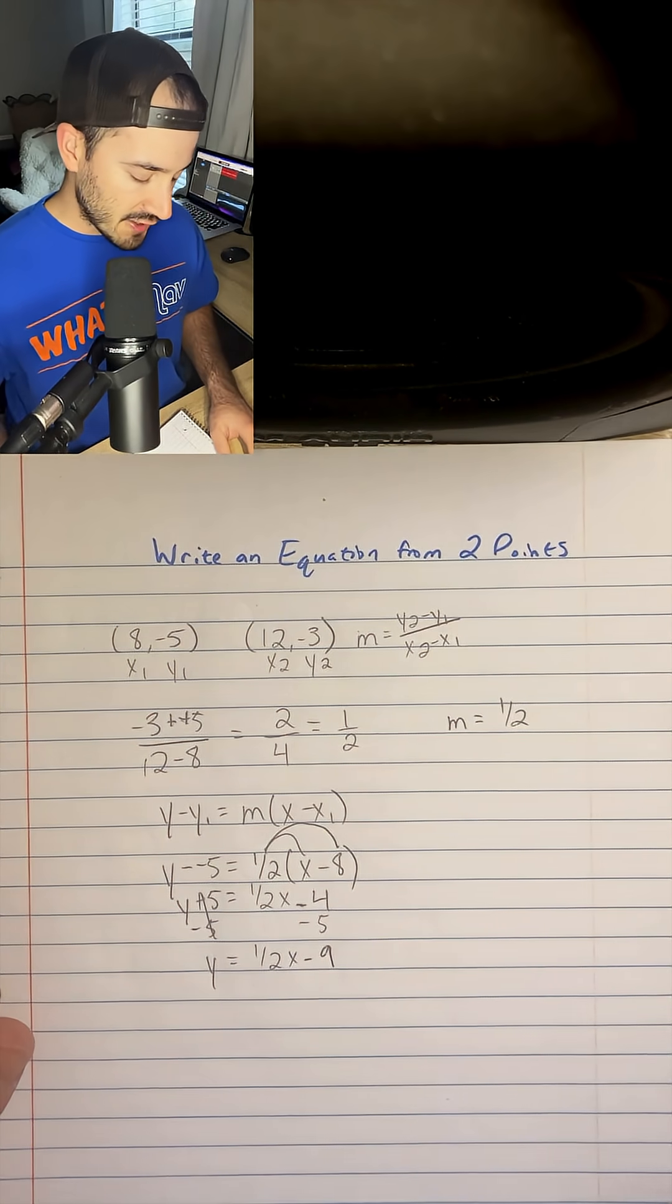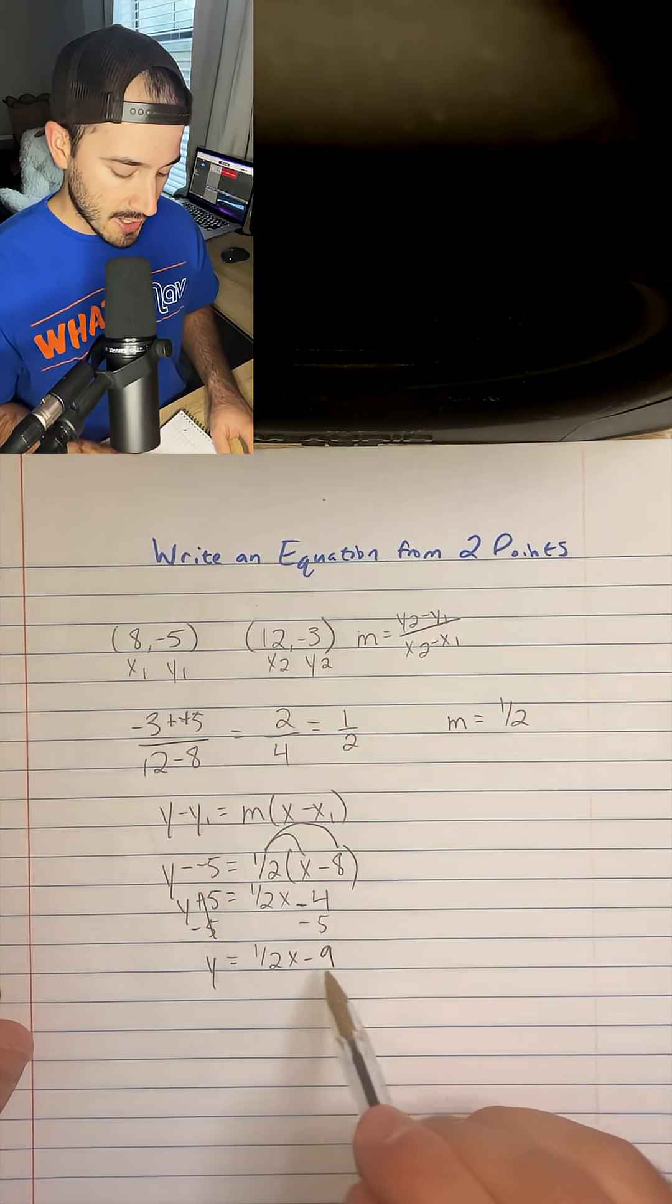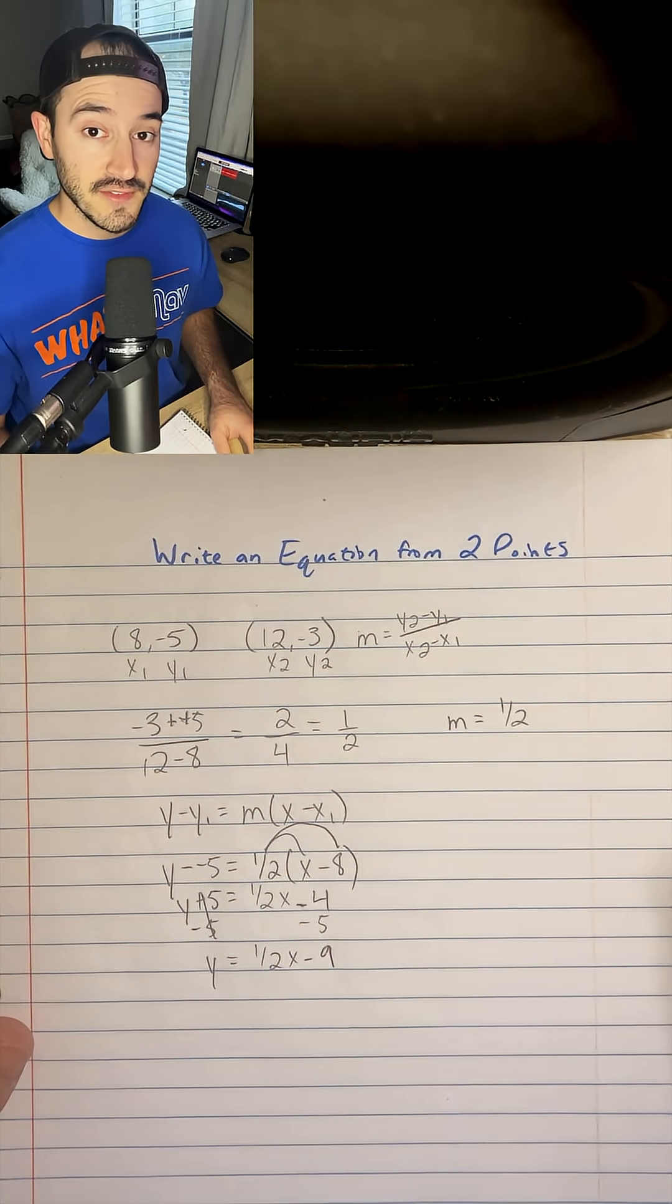And so our final answer in slope-intercept form is y equals 1 half x minus 9, and that is all you have to do.